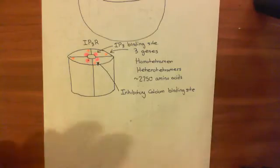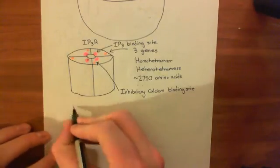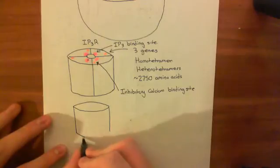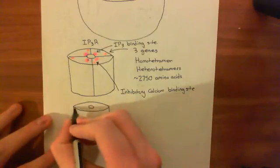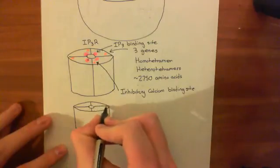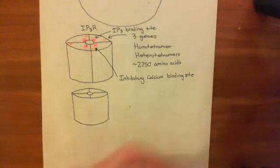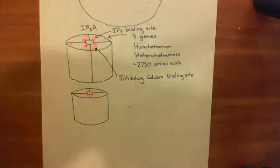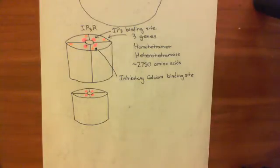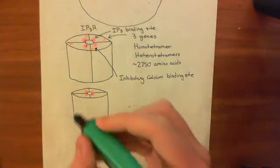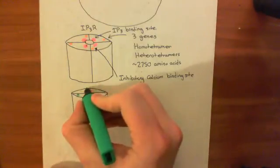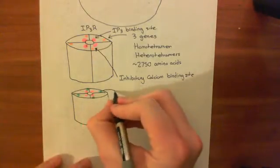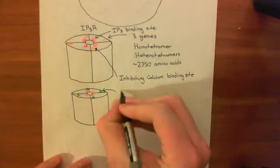Instead, what becomes available is a stimulatory calcium binding site. Here's another picture of the IP3 receptor — it still has four separate subunits. Once IP3 has bound to these four IP3 binding sites, what it results in is the inhibitory calcium binding sites being retracted, and instead a stimulatory calcium binding site is made available. This is shown in green here — our stimulatory calcium binding site.